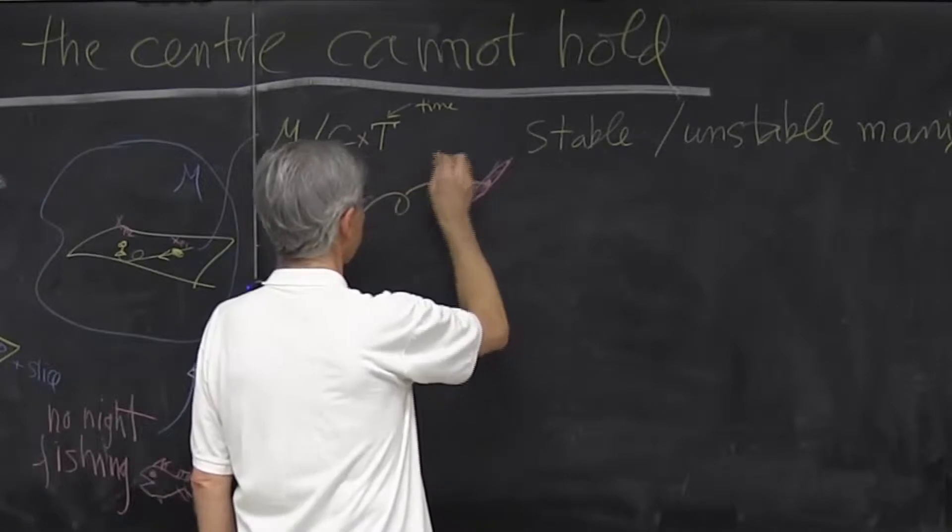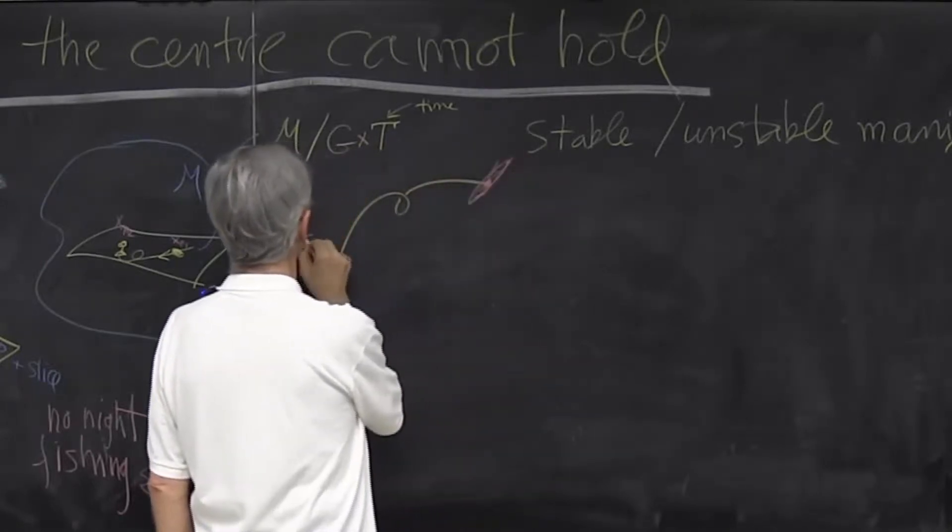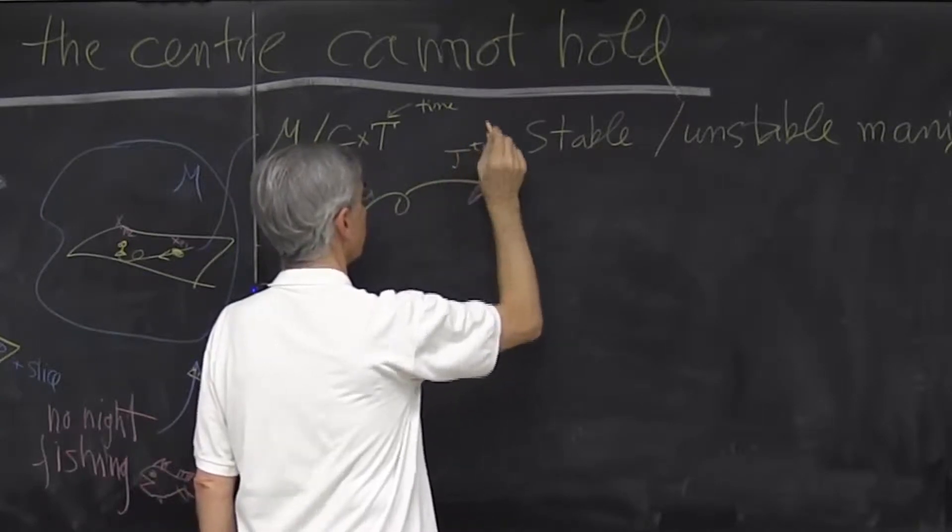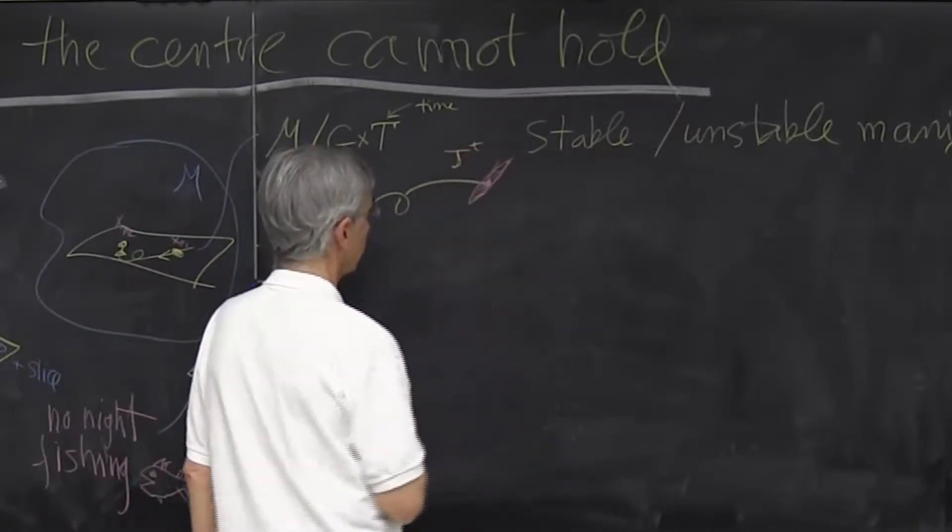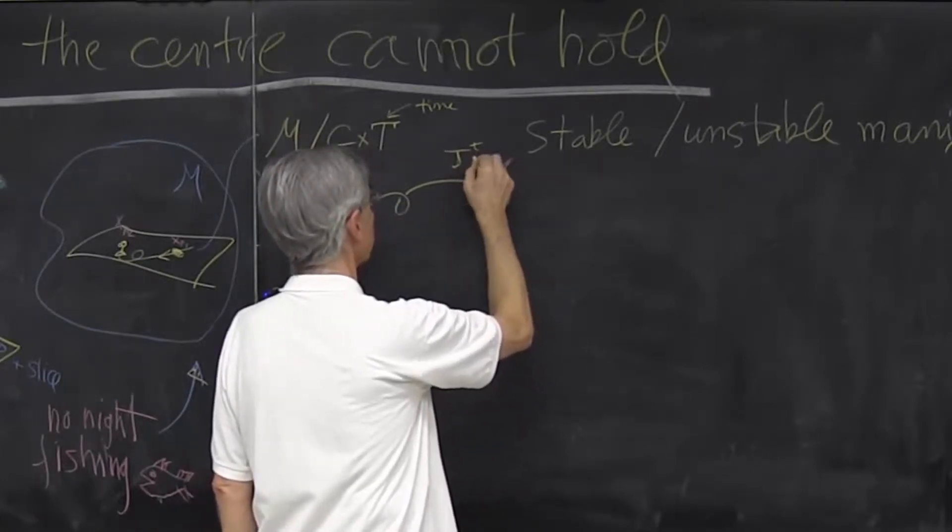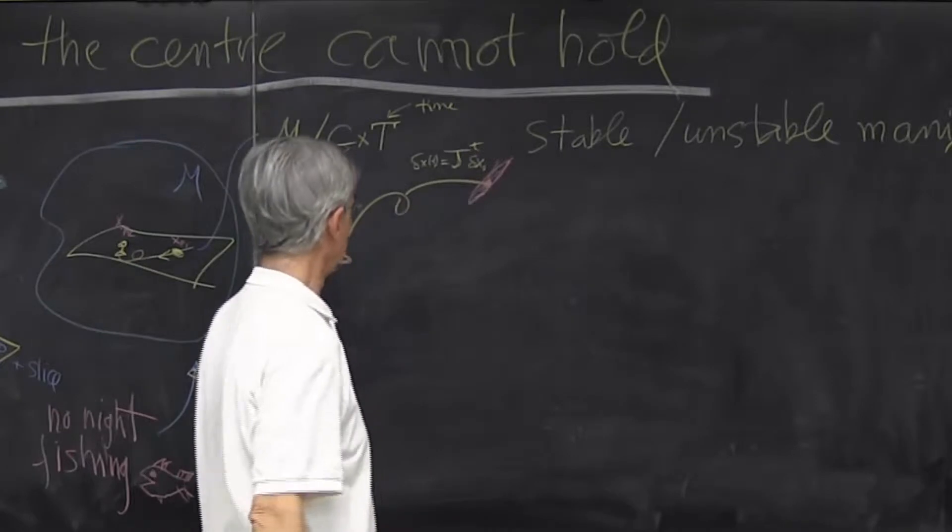that neighborhood will deform. And that local information, we know how it works because if you start with some deviation at time zero, we know that the Jacobian matrix is totally computable from our laws. If this is a theoretical calculation, we know what that thing does.